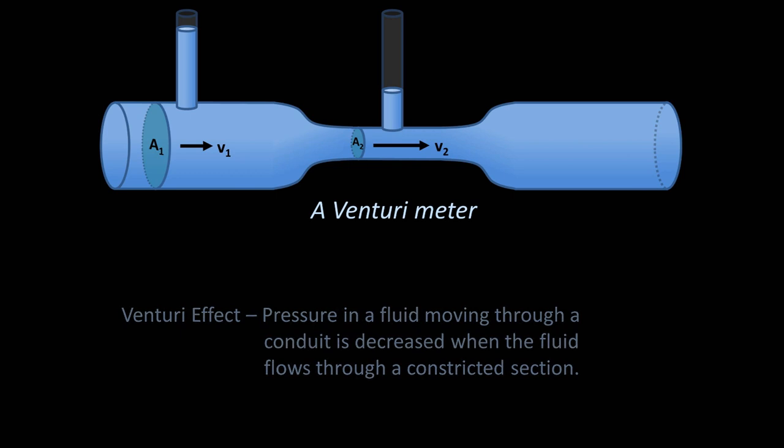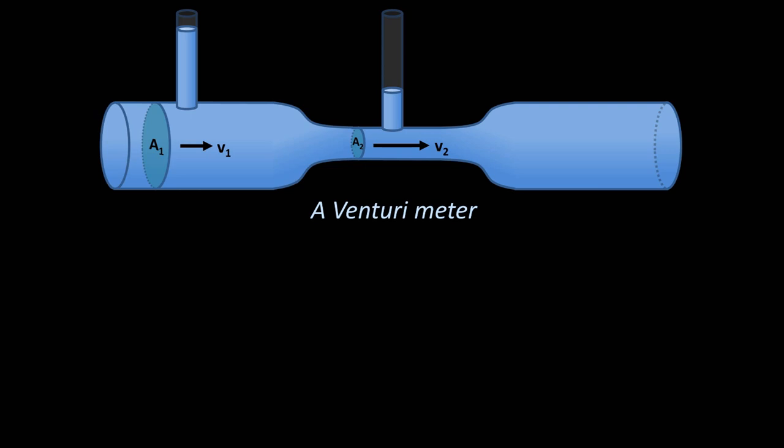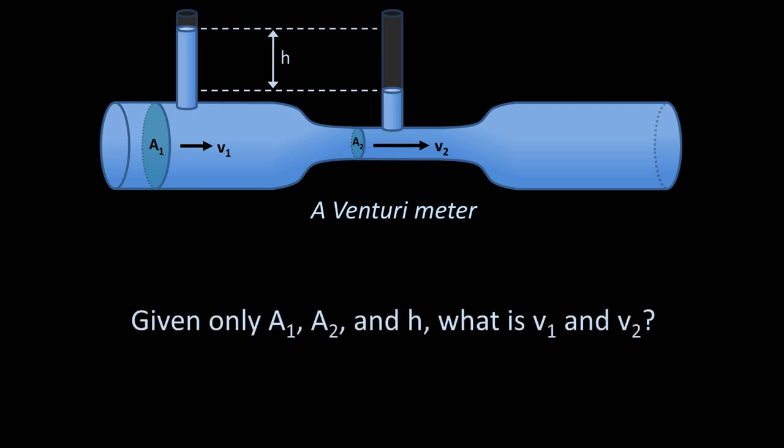How could we analyze this situation quantitatively? Suppose we can measure the height difference between the two columns, which we will call h. Given only a1, a2, and h, what is v1 and v2? I can imagine this seeming like a profoundly difficult problem, but I guarantee you that we have already covered all of the tools necessary to solve it within this video series.